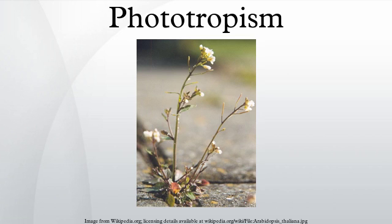Phototropism is the growth of organisms in response to a light stimulus. It is most often observed in plants, but can also occur in other organisms such as fungi. The cells on the plant that are farthest from the light have a chemical called auxin that reacts when phototropism occurs, causing the plant to have elongated cells on the farthest side from the light.